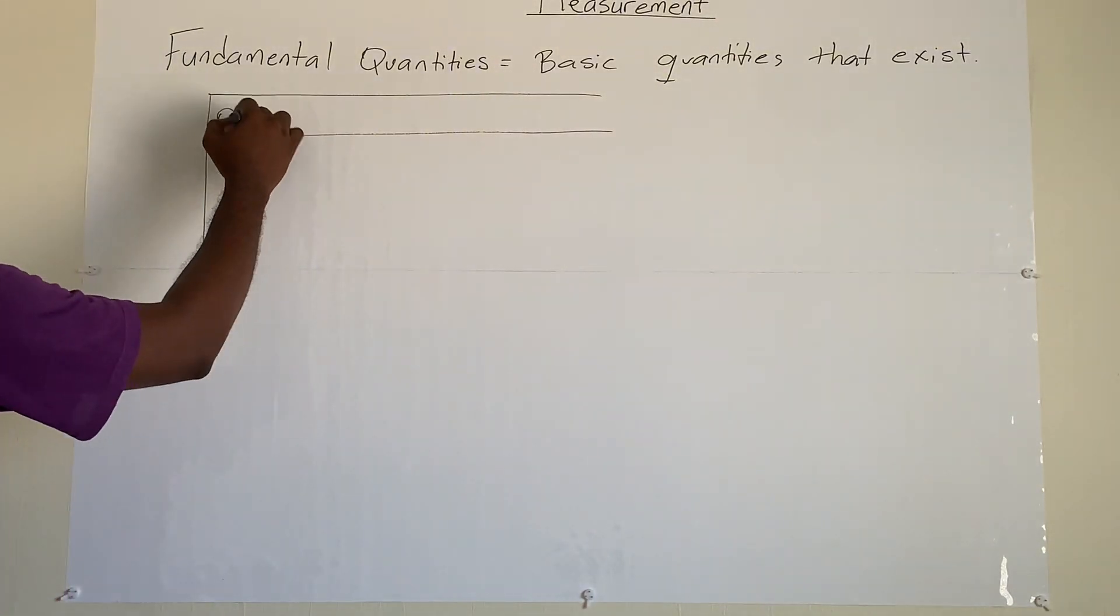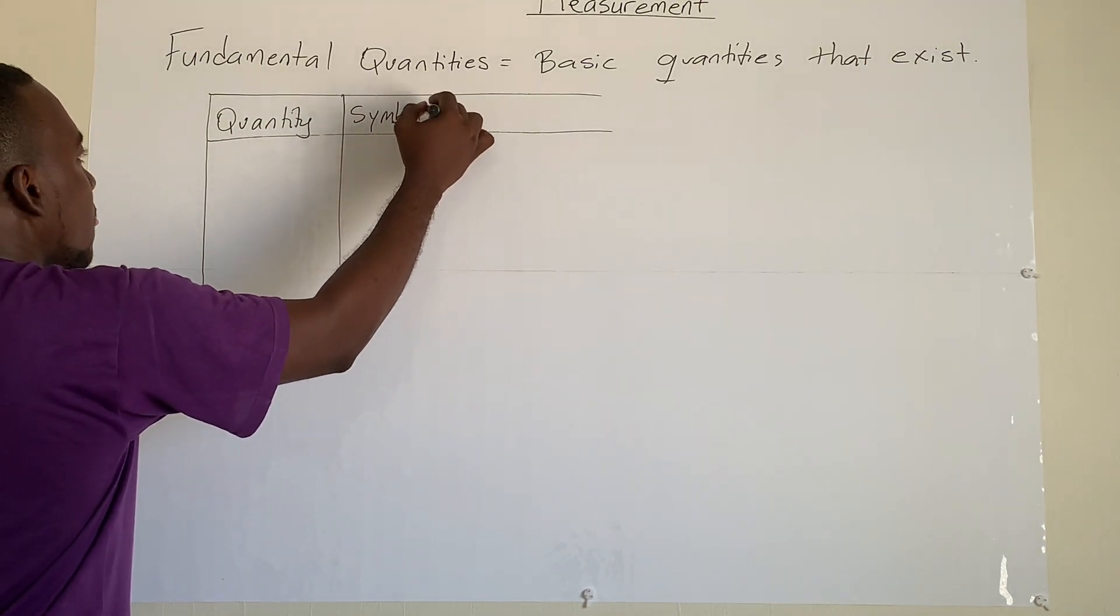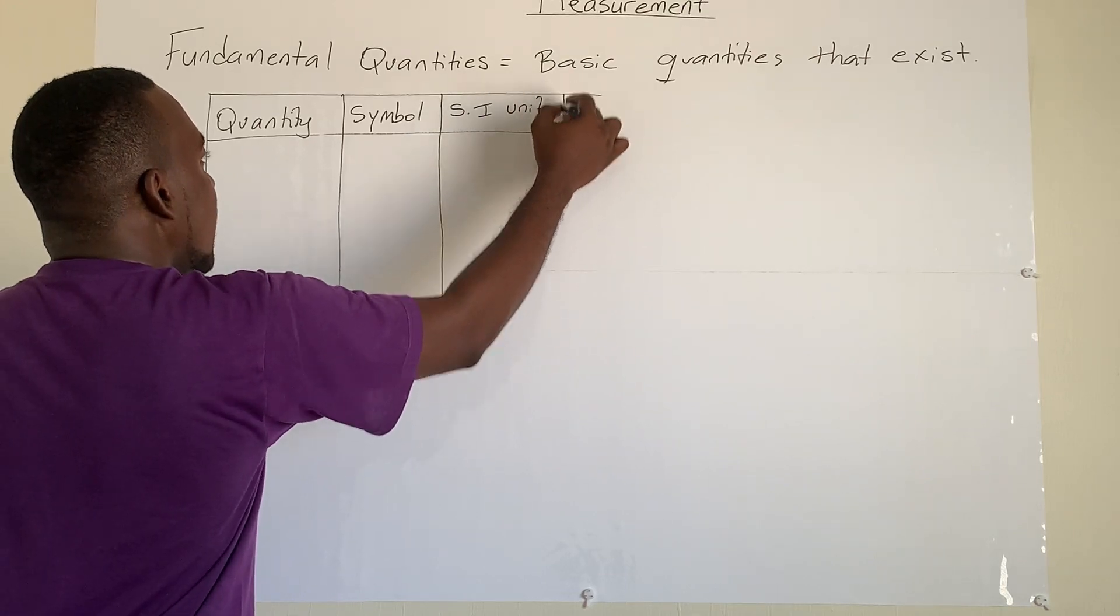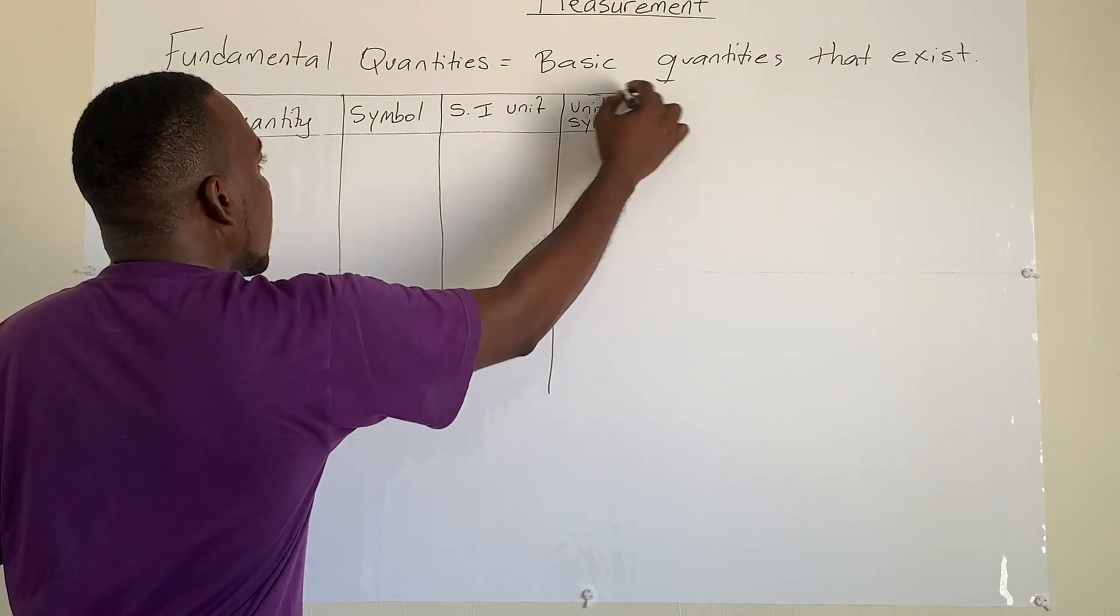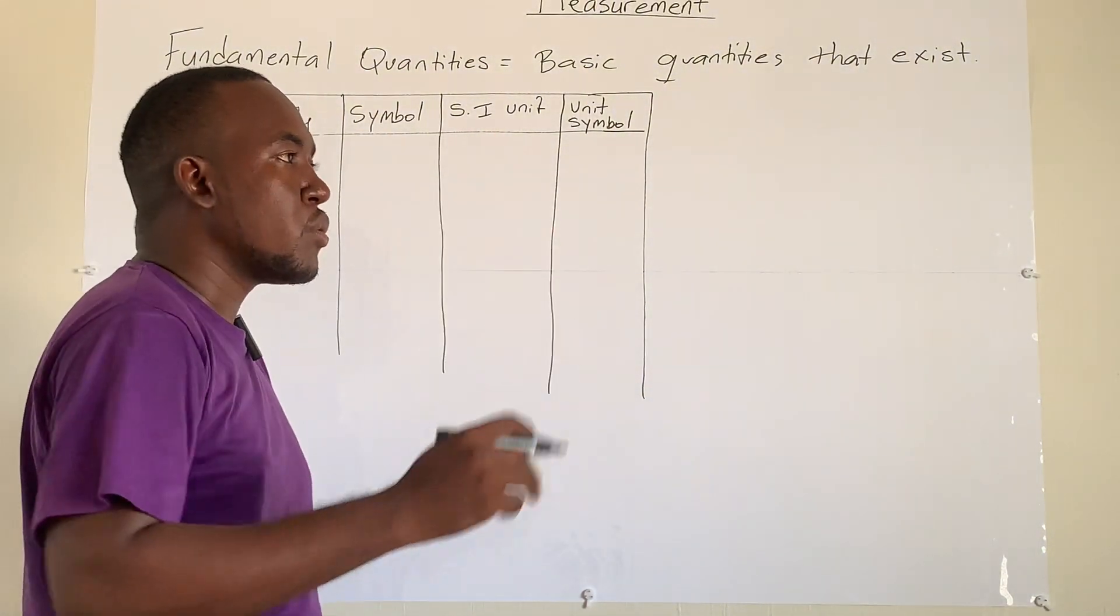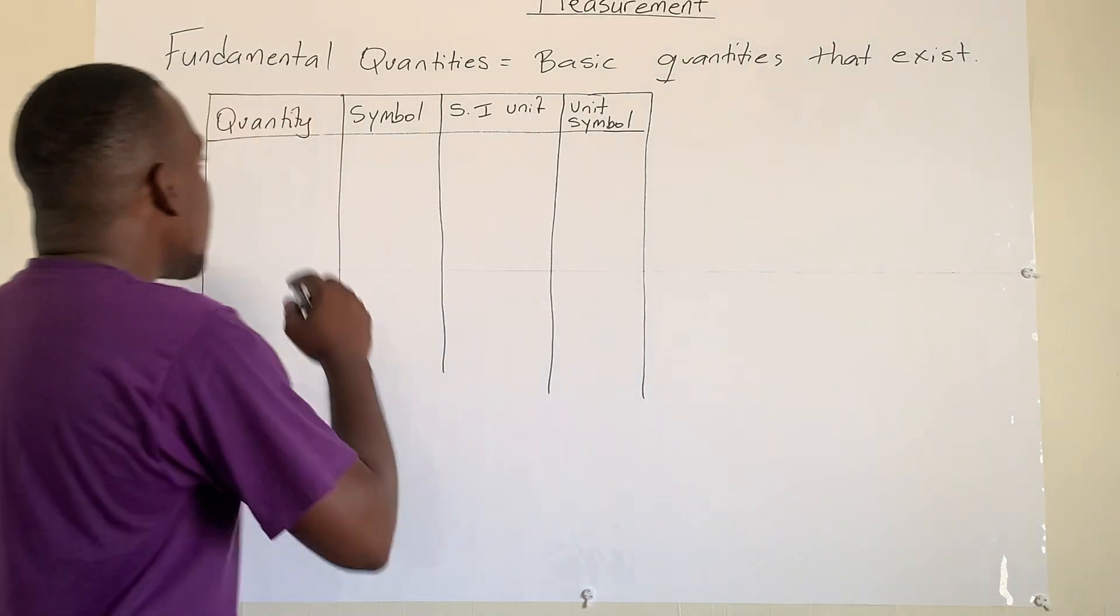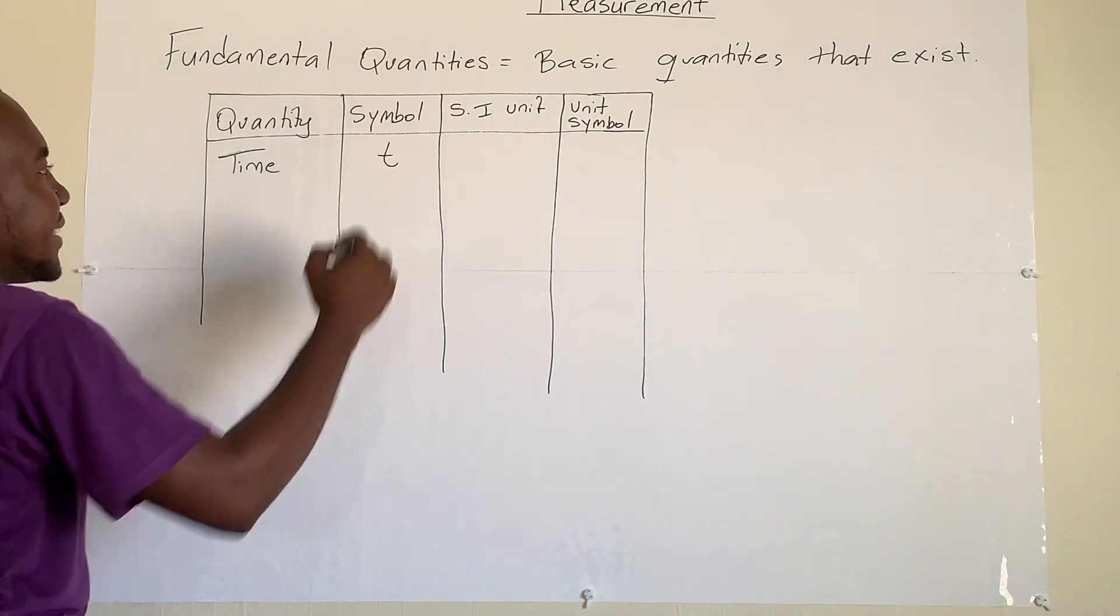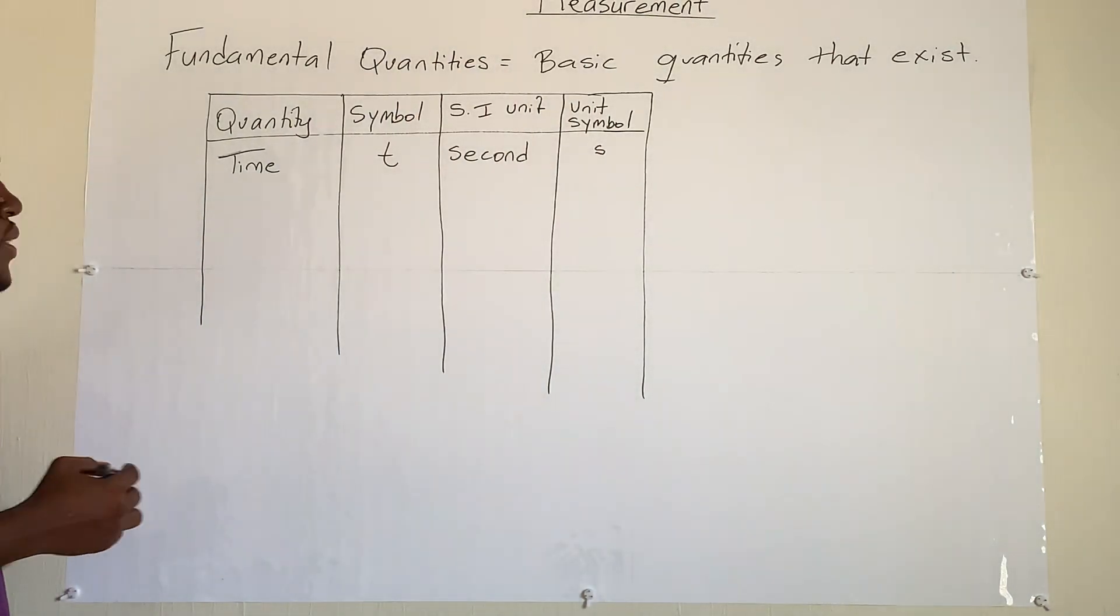In our column here, we're going to have the quantity. Then each quantity has a different symbol. And then for each quantity, there is what we call the SI unit. And then we have the unit symbol. Now, SI unit means it's a standard system that is recognized throughout all the scientific world, that this quantity has this specific unit. So let's go with the first one. We're going to look at time. And time has a symbol of a common t. Its SI unit is seconds. And its symbol is common s.